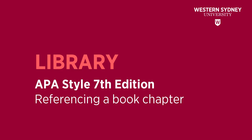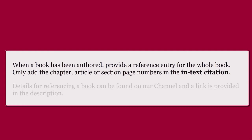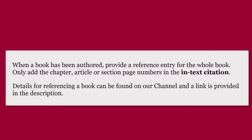This library video will show you how to reference a book chapter using the APA 7th referencing style. When a book has been authored, provide a reference entry for the whole book, only citing the chapter, article, or section page numbers in the in-text citation. Details for referencing a book can be found on our channel and a link is provided in the description.